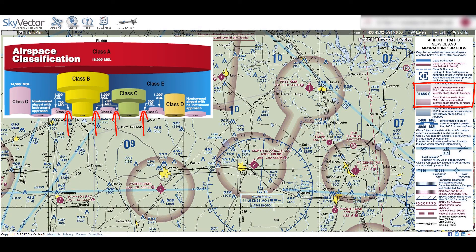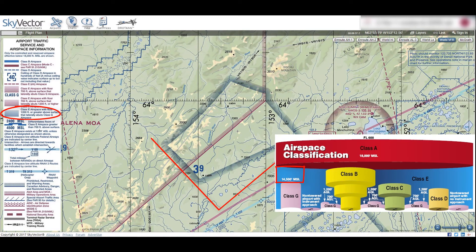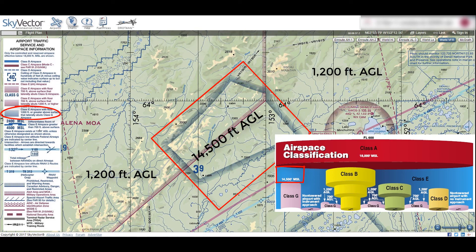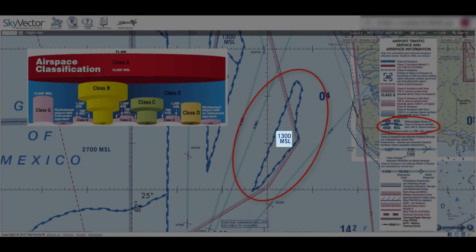The second class E symbol is a fuzzy magenta line that fades inwards, meaning the class E airspace on the lighter side starts at 700 feet AGL. The third class E symbol is a fuzzy blue line that fades outwards, meaning on the lighter side the class E airspace has a floor of 1,200 feet AGL, and on the darker side it starts higher up — this tends to be found out west and in Alaska over very sparsely populated areas. The fourth and final class E symbol is a blue zipper line, meaning class E airspace starts higher than normal — in this case at 1,300 feet MSL.